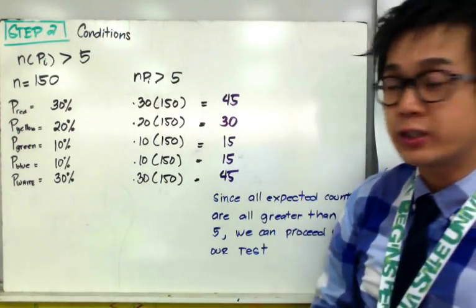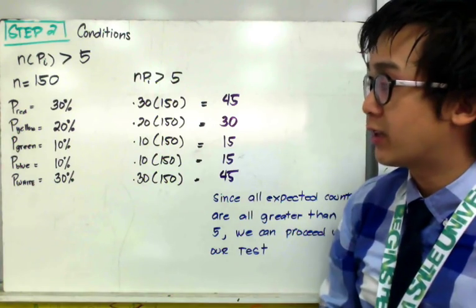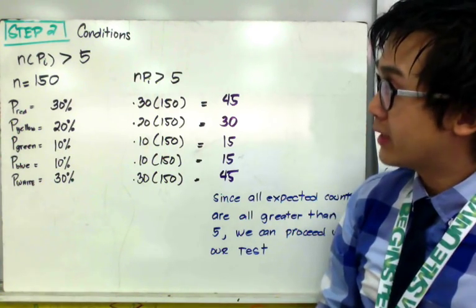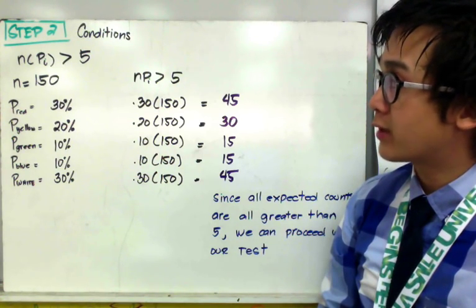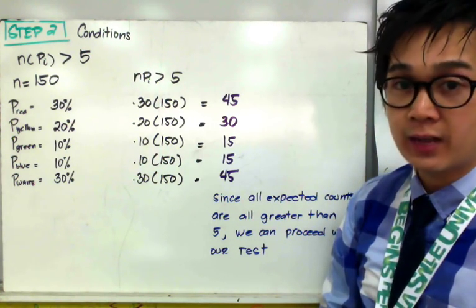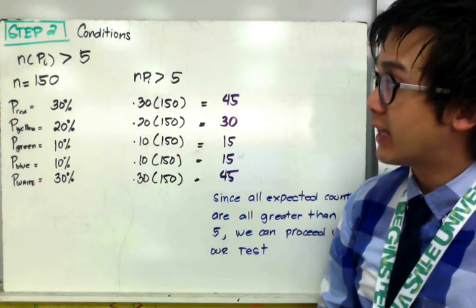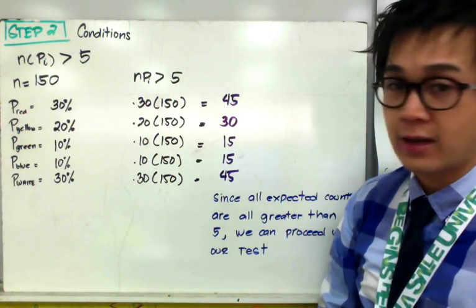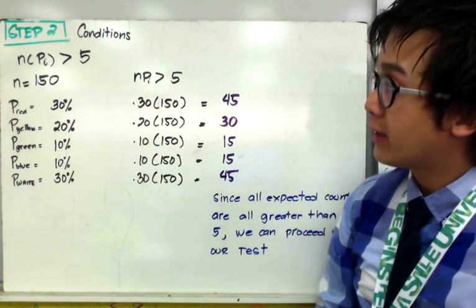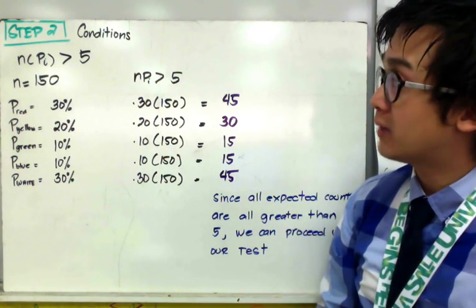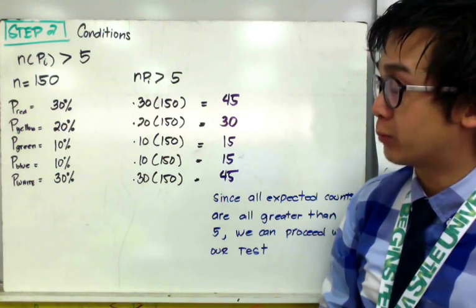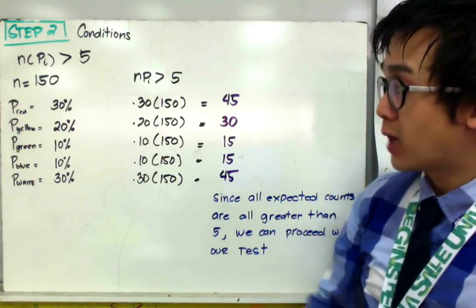So for our condition, just like the conditions that we did for proportion, but this time we're going to add the expected count. The expected count is one of the conditions that we need to satisfy in a chi-square goodness-of-fit, and it states that it needs to be greater than 5. Now our N in our expected count formula is the sample size, and P sub i is the individual proportion for our word problem.